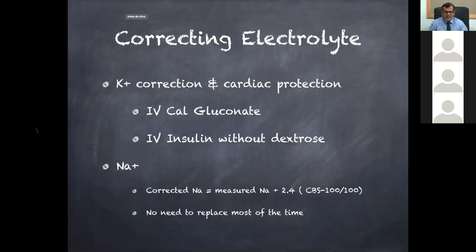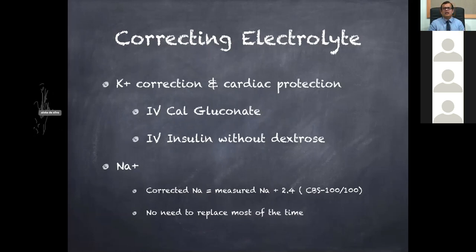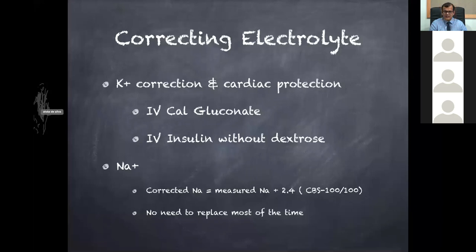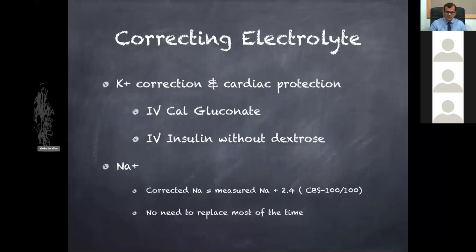Regarding the sodium of 123 — should we rush to give 3% saline? No. In hyperglycemia, raised osmotic pressure draws fluid into capillaries, causing dilutional hyponatremia. We must calculate the corrected sodium: measured sodium + (2.4 × (capillary blood sugar − 100) / 4). Her corrected sodium was around 138, so no correction was needed. When you correct the sugars, the sodium will automatically correct. This is a common mistake to avoid.